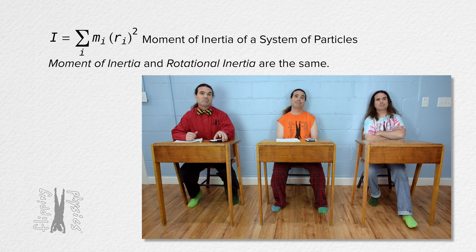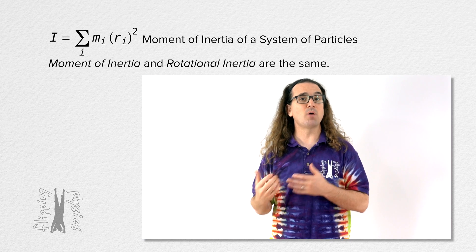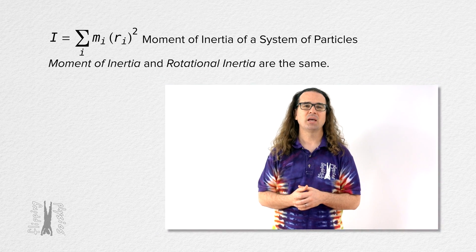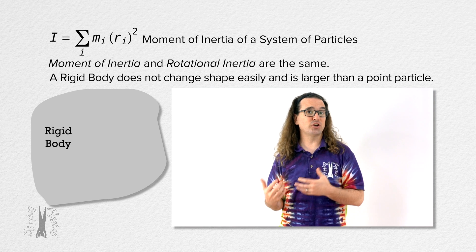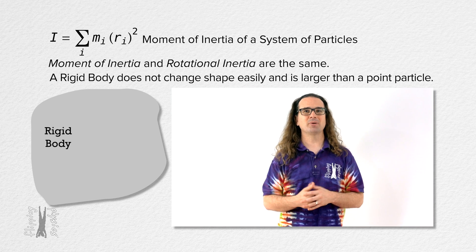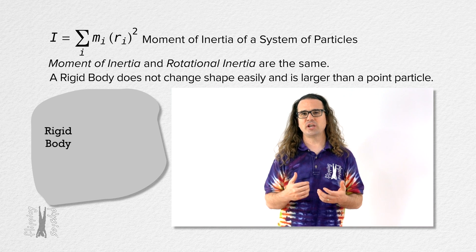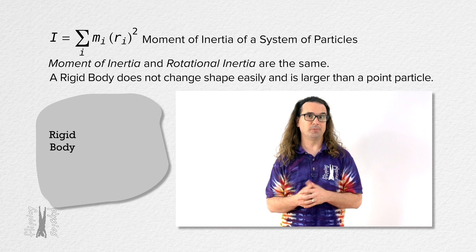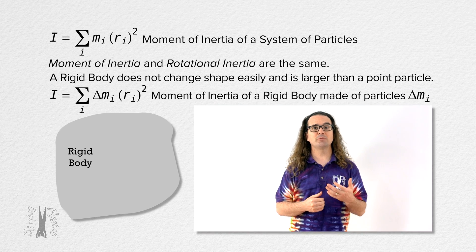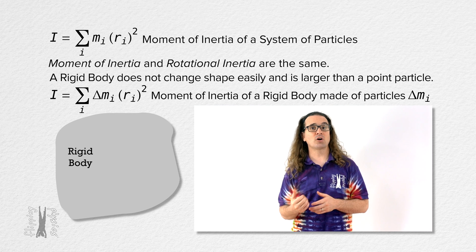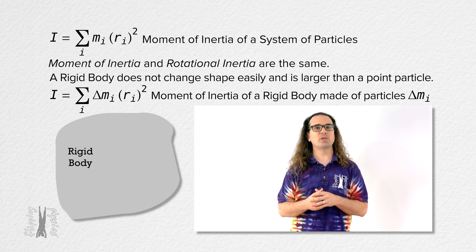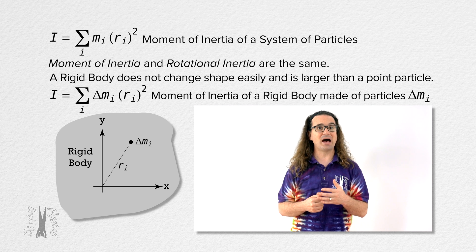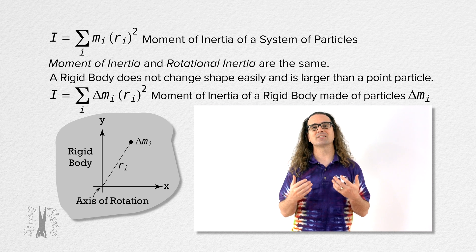What we are doing today is we are going to determine the moment of inertia, or rotational inertia, of rigid bodies. A rigid body, or a rigid object with shape, is simply an object that does not change shape easily and is larger than a point particle. We are going to treat a rigid body as a large number of small particles, each with a mass delta m sub i located a distance r sub i from the axis of rotation.